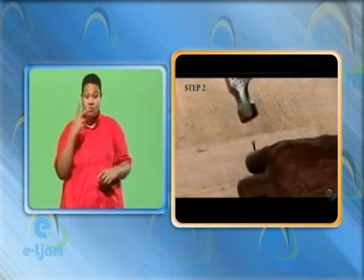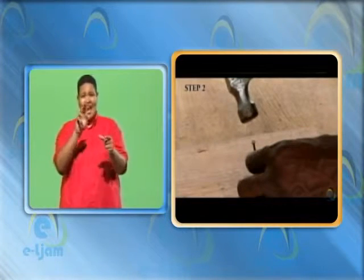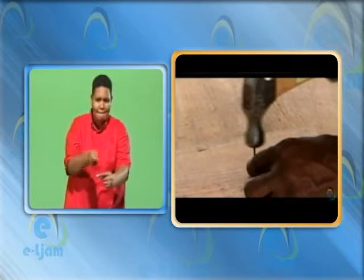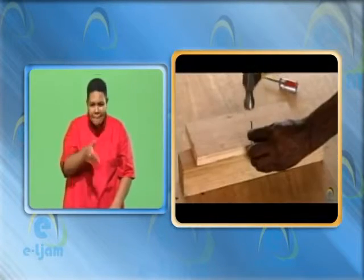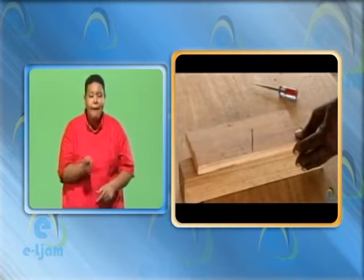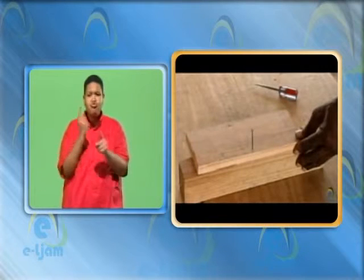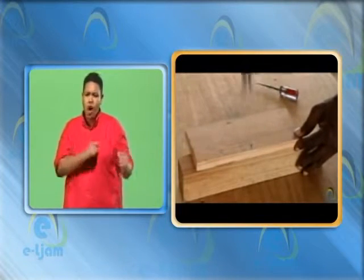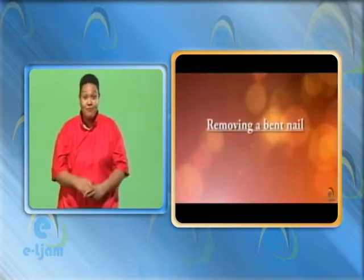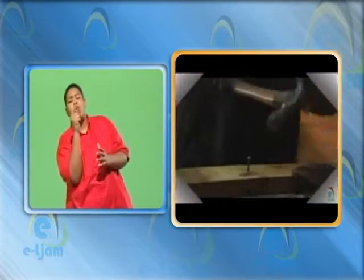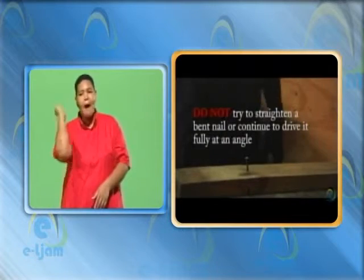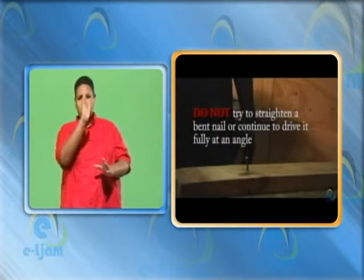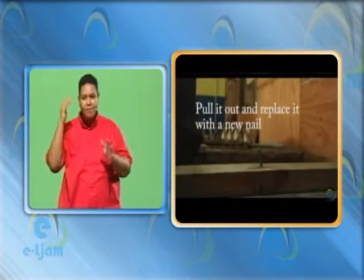Step 2: hold the nail between your thumb and forefinger with the nail perpendicular to the surface being nailed. Hold the hammer near the end of the handle and watch the hammerhead to make sure that it strikes the nailhead squarely. Start with a few gentle taps on the hammerhead. Give it a couple of quick taps and pull your hand away. Check that it is again at right angles to the surface. To finish driving the nail, keep your eye on the head and apply more intense strokes with the center of the hammer face. If you bend a nail as you drive it, stop and remove it. Do not try to straighten a bent nail or continue to drive it fully at an angle. Pull it out and replace it with a new nail.